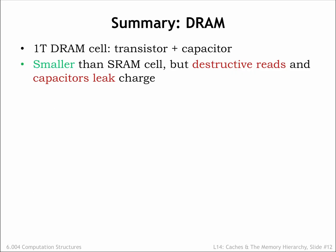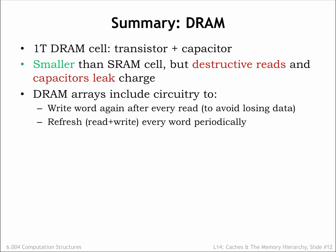In summary, DRAM bit cells consist of a single access FET connected to a storage capacitor that's cleverly constructed to take up as little area as possible. DRAMs must rewrite the contents of bit cells after they are read, and every cell must be read and written periodically to ensure that the stored charge is refreshed before it's corrupted by leakage currents.